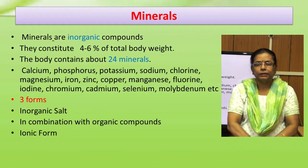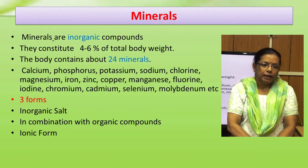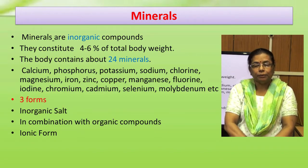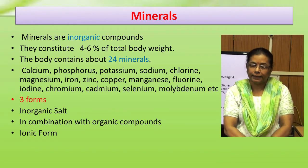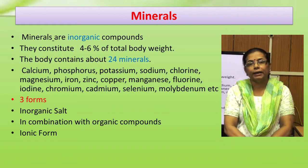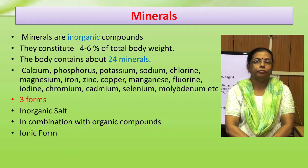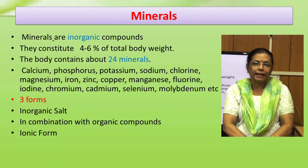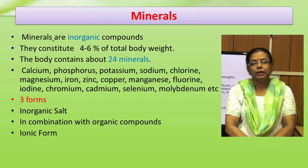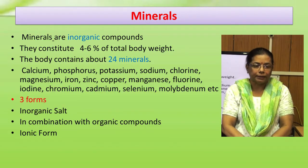Minerals are present in food and tissue in three forms: as inorganic salts, for example sodium chloride and calcium phosphate; in combination with organic compounds such as phosphoprotein, phospholipid, and hemoglobin; and chiefly in ionic form, such as sodium ions, potassium ions, and chloride ions.